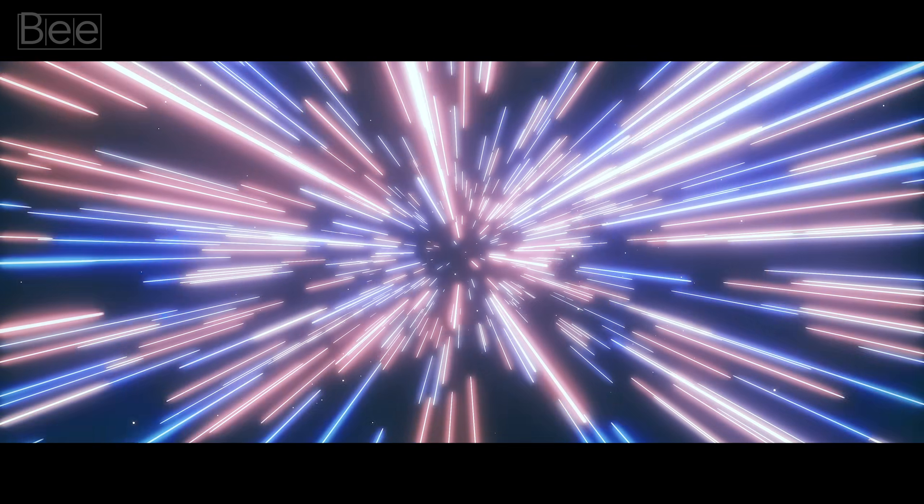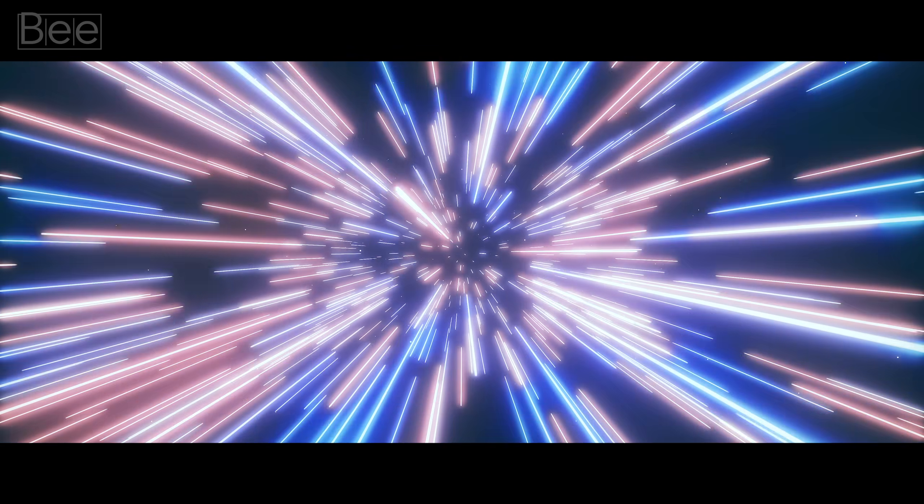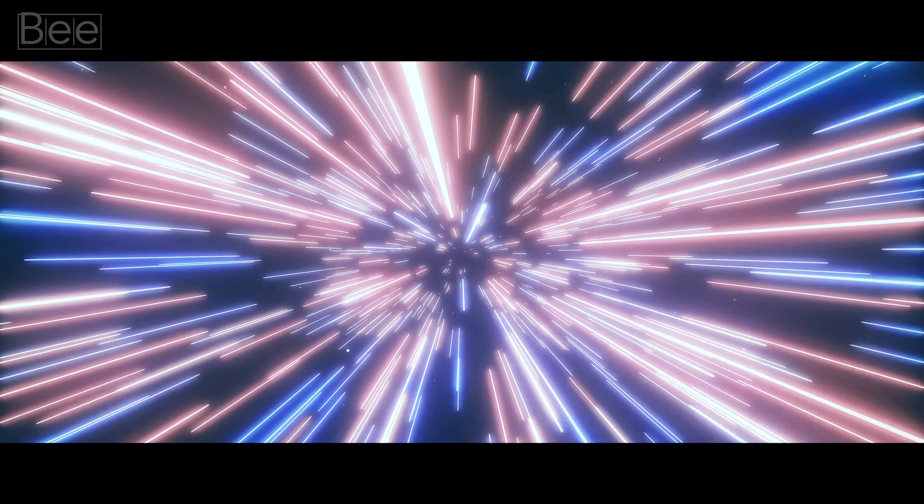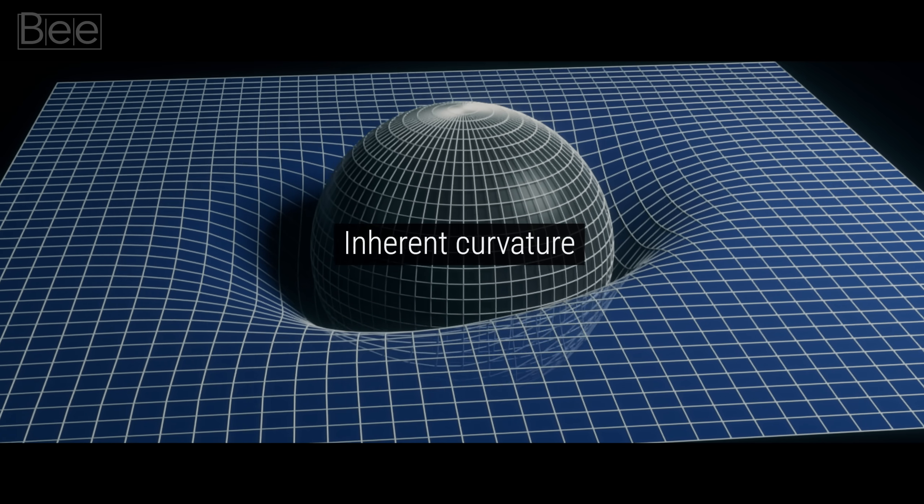But how could this be? What does this bending of light mean? Well, thanks to his incredible imagination and deep thinking, he came up with an answer. He considered that maybe the light was following the shortest and straightest path that it could. But that in space, there was no visual objective straight path and maybe there was an inherent curvature.